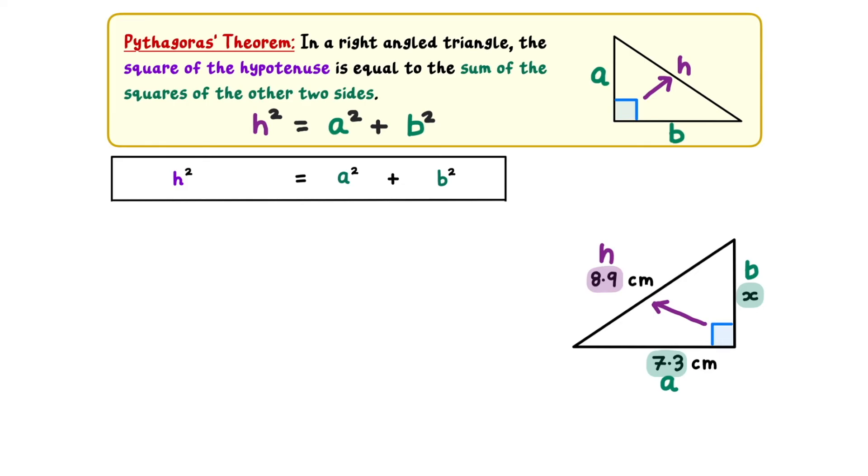When we put these values into the statement of Pythagoras' theorem, we get 8.9 squared is equal to 7.3 squared plus x squared. This looks a bit different from the first two examples, and that's because the unknown side, x, does not correspond to the hypotenuse of the triangle. To solve this equation, we should start by simplifying things with our calculator. 8.9 squared equals 79.21, and 7.3 squared equals 53.29.